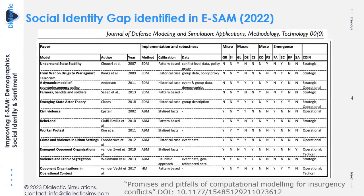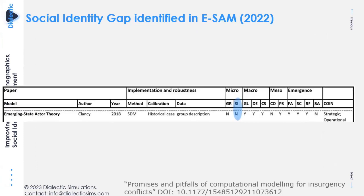The model was reviewed in a systemic review published in the Journal of Defense and Modeling. They looked at about 600 insurgency models, picked out about 15, and identified that one area of opportunity in our model was that we did not have social identity. When we first modeled counter-ISIS, there was a block of population without any social identities within it, and they said that could be improved on — so we took this opportunity with the Marine Corps to add that work.